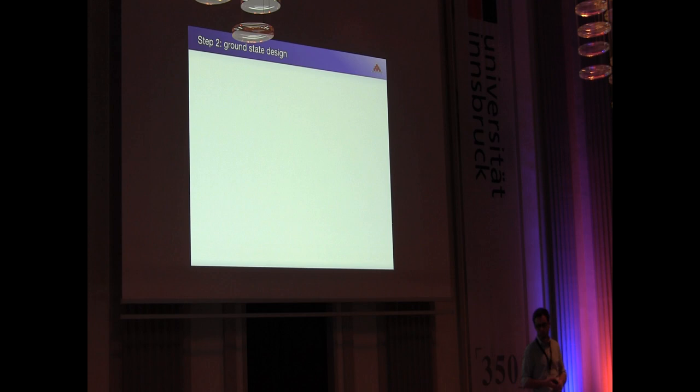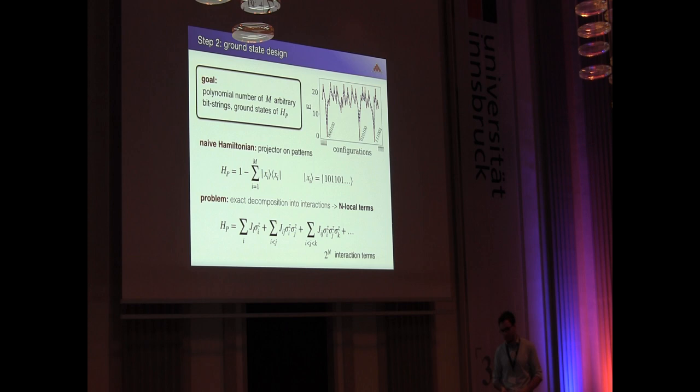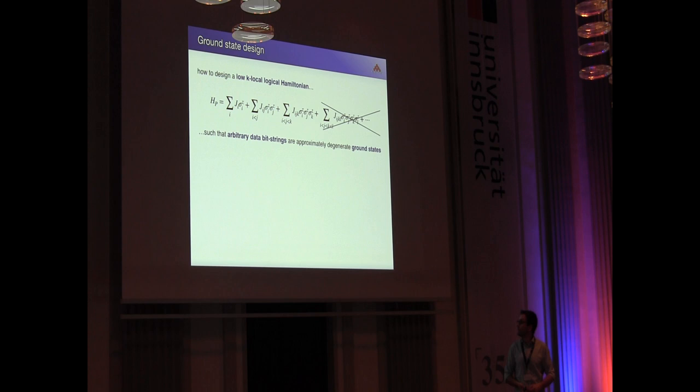Let me now switch to the second step of our protocol, namely the classical problem of the ground state design. Our goal is to take a polynomial number of arbitrary bit strings and encode them in the ground states of classical Ising Hamiltonian. The naive approach would be to write down a projector and decompose it into interactions, but one immediately sees that this is not feasible due to the n-local terms that appear. What we really want is a low-K-local logical Hamiltonian which has relevance in implementation, such that arbitrary data bit strings are approximately the degenerate ground states.